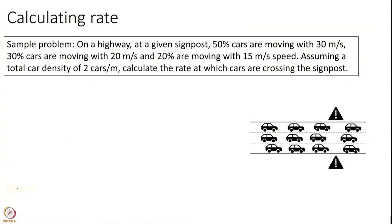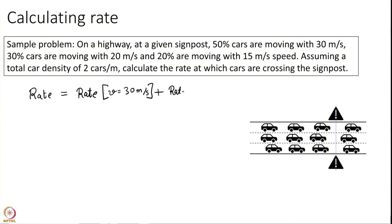Hopefully you are back and hopefully you have tried to solve this. If you have not, please pause the video and do attempt to solve this one — it is critically important. We are going to solve it together now. We are going to divide this problem: the total rate will be the rate at which cars moving with speed 30 meters per second, plus the rate of cars traveling at 20 meters per second, plus the rate of cars traveling at 15 meters per second.